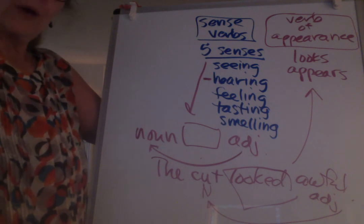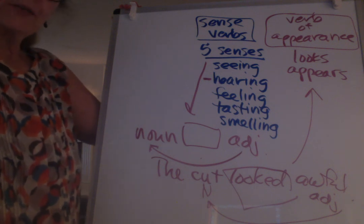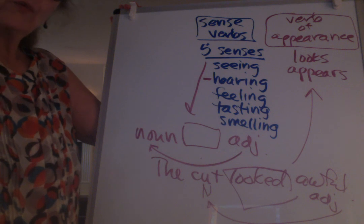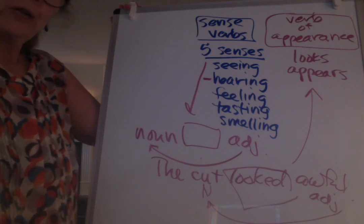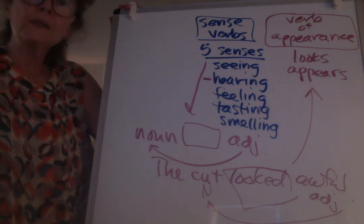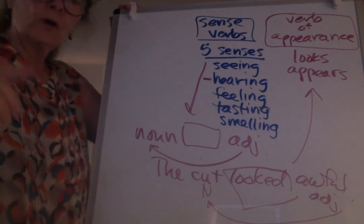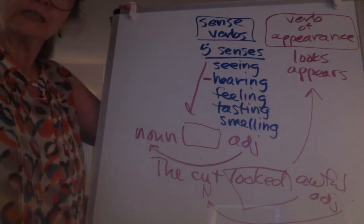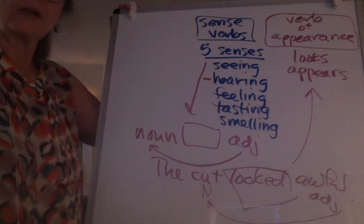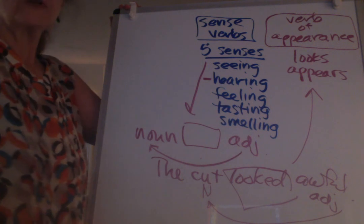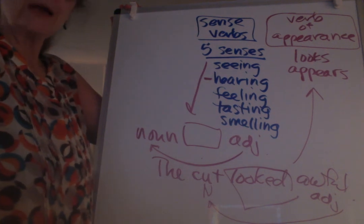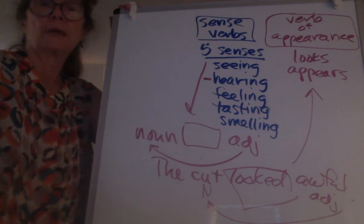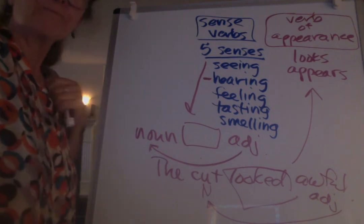Remember, adverbs come pretty much anywhere in a sentence, but adjectives only come in these specific places: either right before the noun they're modifying, or after a linking verb, sense verb, or verb of appearance. What we always want to do is make sure we're looking at whether the describing word is modifying a noun or a verb. That's the first thing we always want to think of. We'll come back in a minute and try some examples.